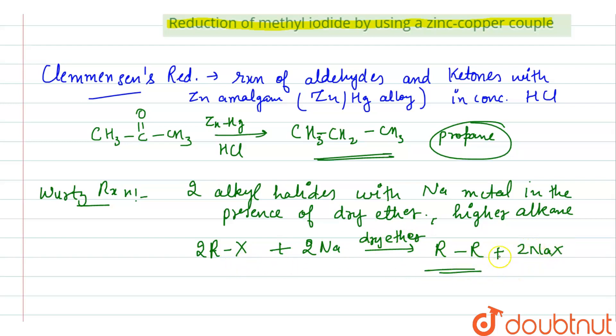This will give R-R plus 2NaX. This R-R is a higher alkane, meaning there is only one alkyl group in the reactant part and the higher alkane will contain two alkyl groups.